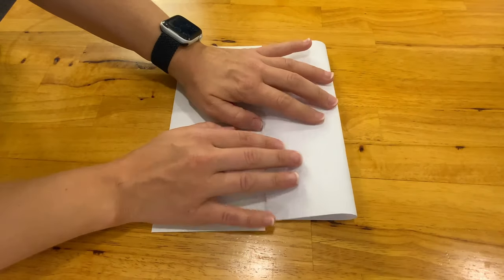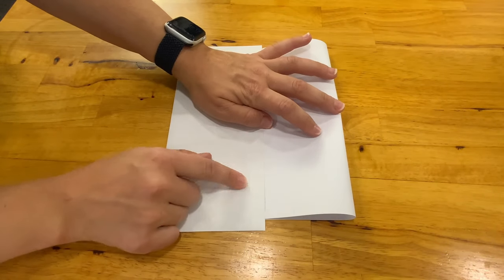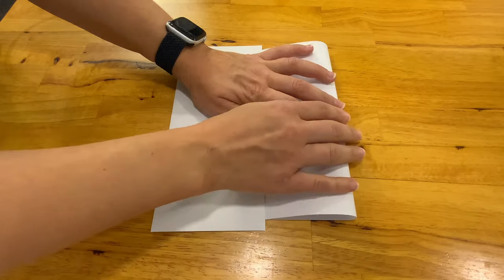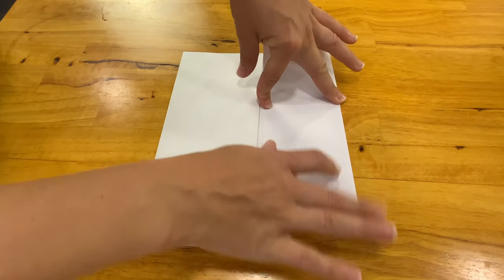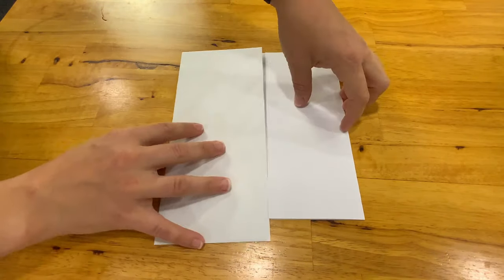So you want to fold this over so that these two seams, the seam of the envelope and the edge of the paper, line up as evenly as possible. There you go.